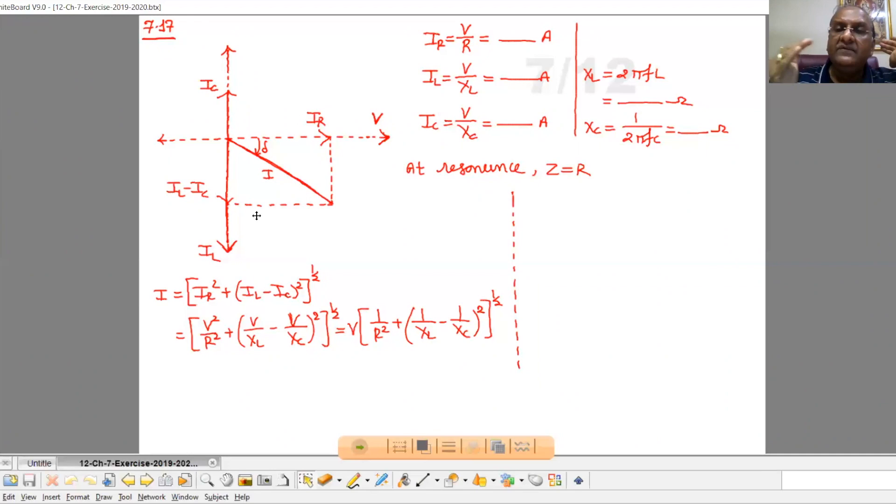To prepare the phasor diagram, we will consider the voltage phasor as the reference, taking it on the x-axis. This voltage phasor is the same for all. In the case of a resistor, there is no phase difference between voltage and current, so the current phasor for the resistor is represented in the direction of the voltage phasor. The current through the resistor is IR.